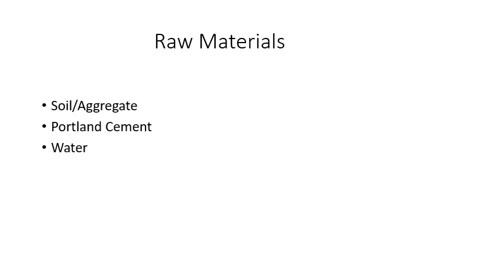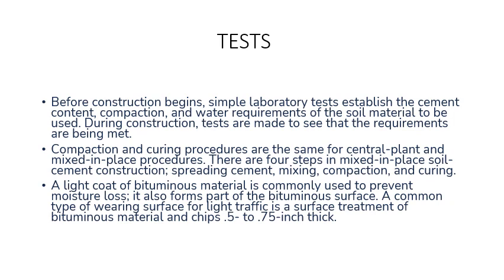Raw Materials: Soil Aggregate, Portland Cement and Water. Tests: Before construction begins, simple laboratory tests establish the cement content, compaction and water requirements of the soil material to be used. During construction, tests are conducted to ensure requirements are being met. Compaction and curing procedures are the same for central plant and mixed-in-place procedures. There are four steps in mixed-in-place soil cement construction: spreading cement, mixing, compaction and curing. A light coat of bituminous material is commonly used to prevent moisture loss and forms part of the bituminous surface. A common wearing surface for light traffic is a surface treatment of bituminous material and chips. Soil cement is 1.5 to 2.75 inches thick.